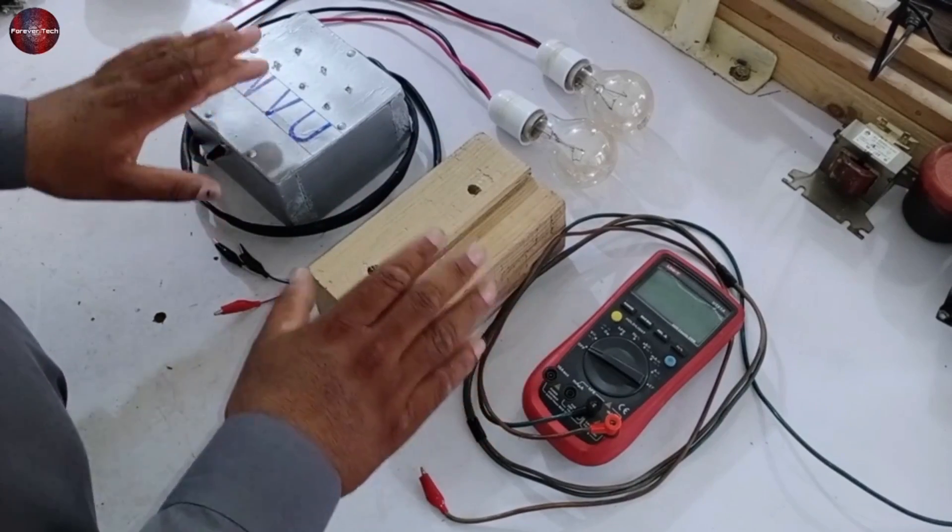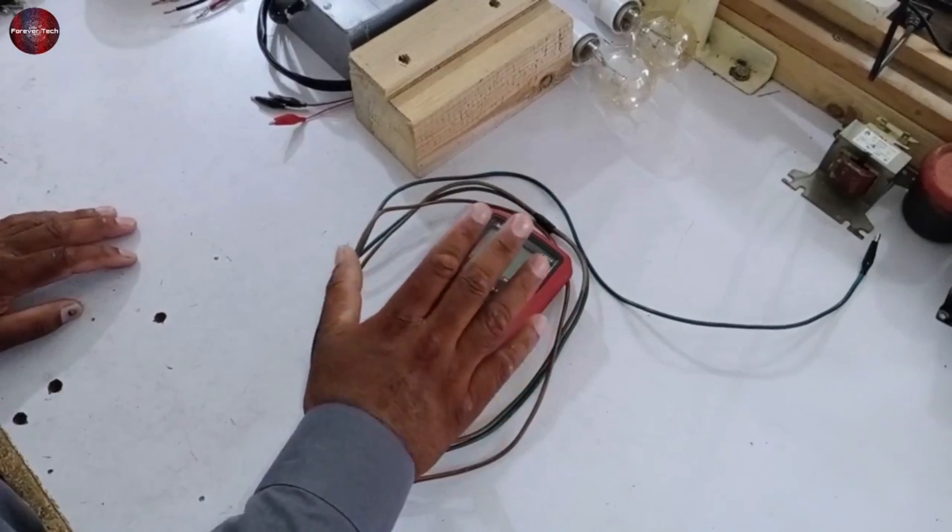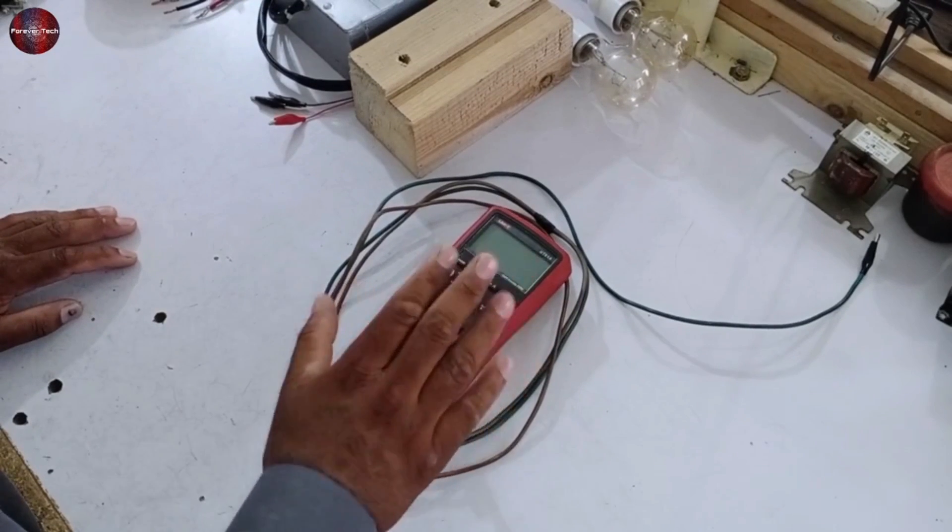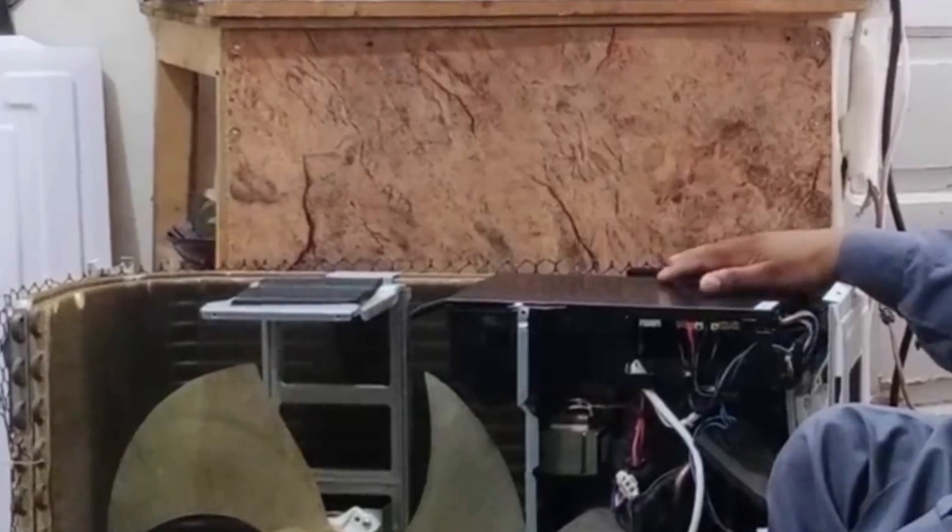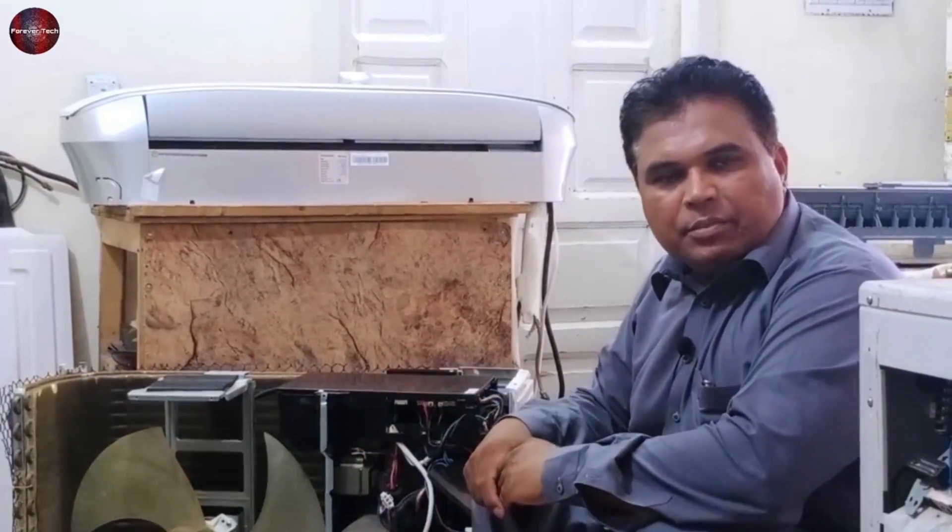And this I will tell you through the bulbs and this tester in the next video. But today, I will demonstrate how to test the inverter compressor through the multimeter. This is the outdoor unit of inverter AC on which I will tell you how to test the DC compressor.